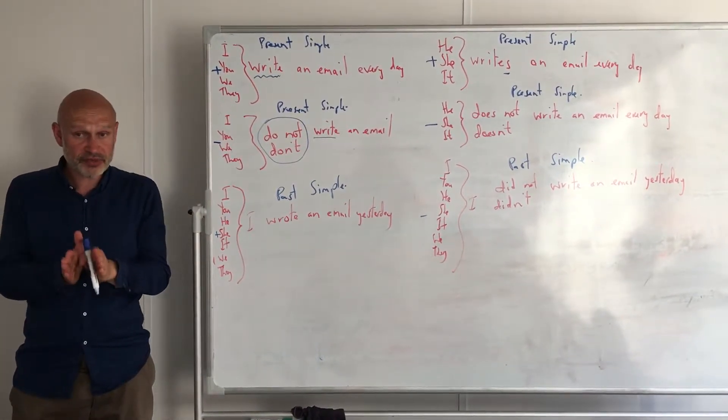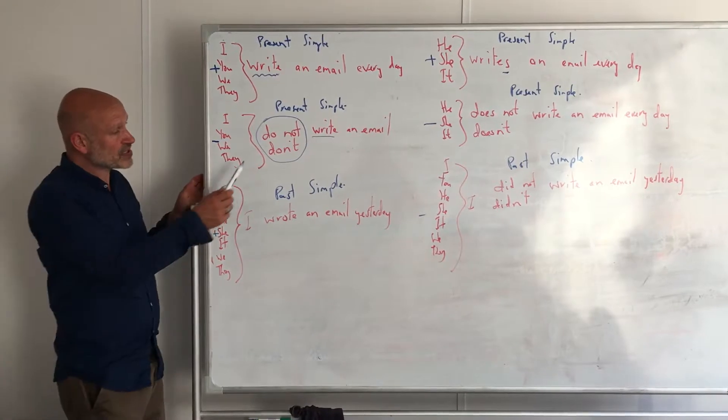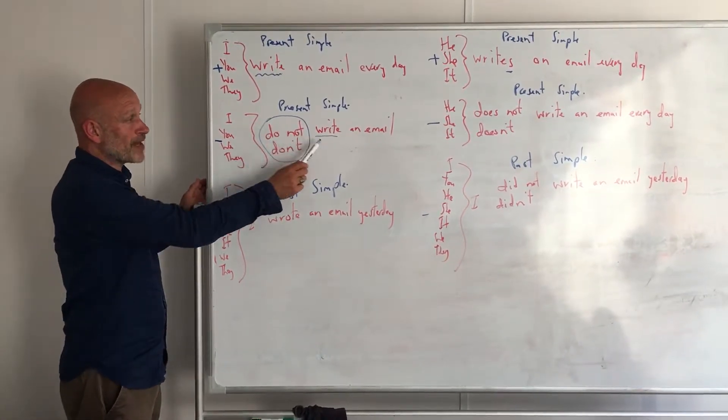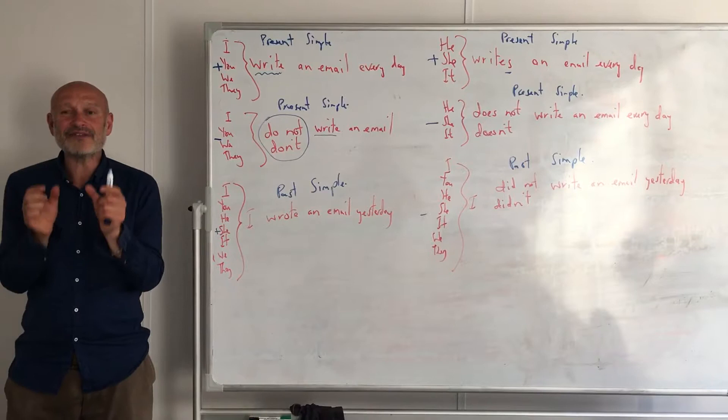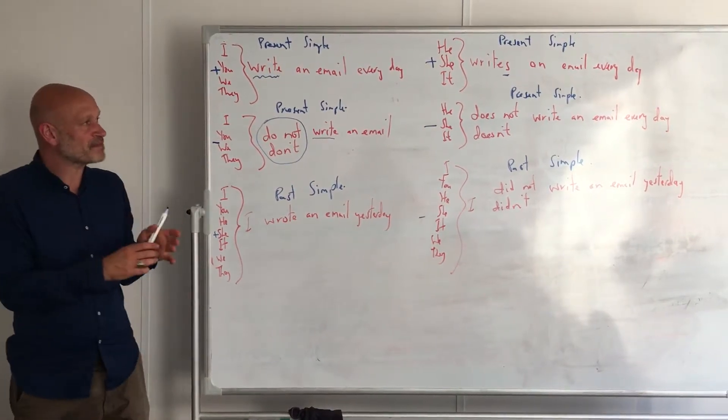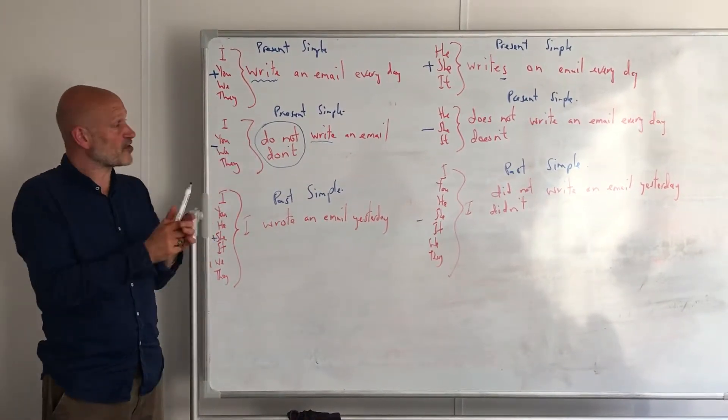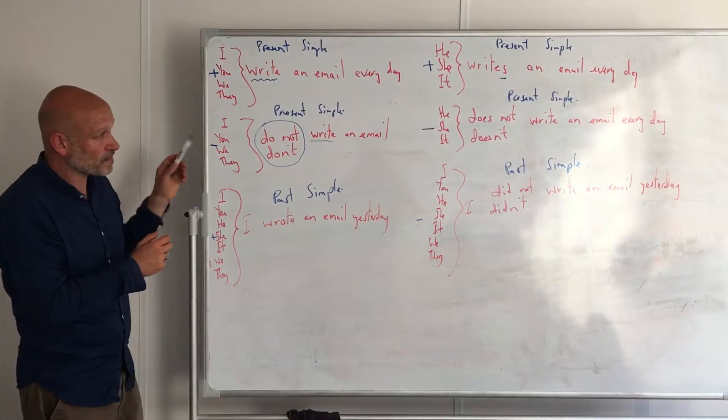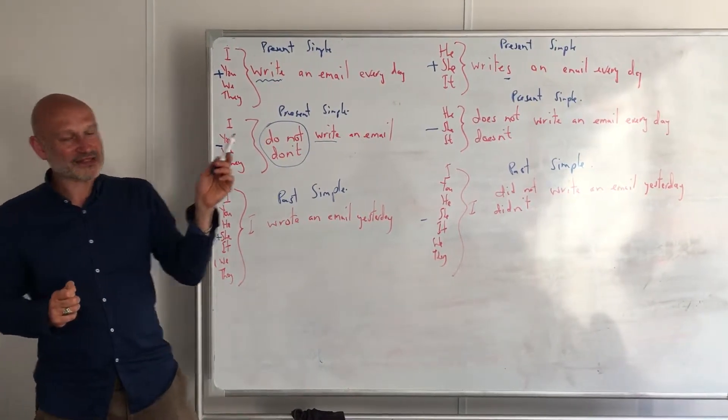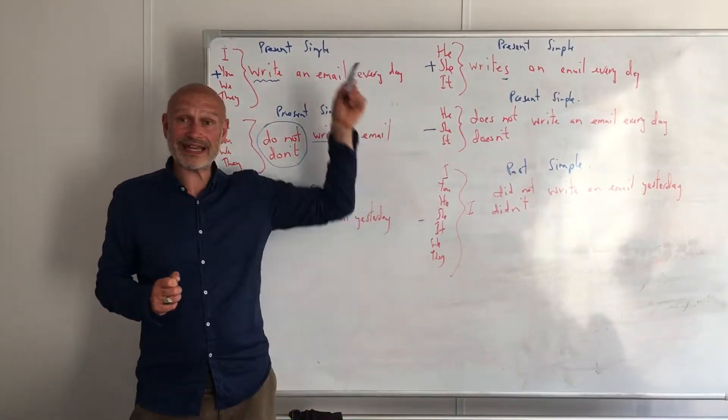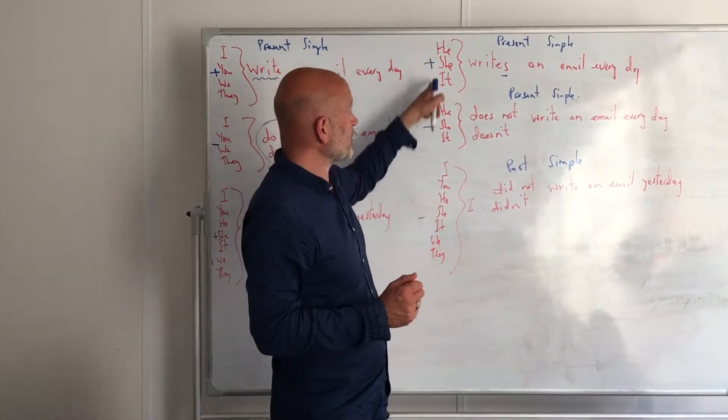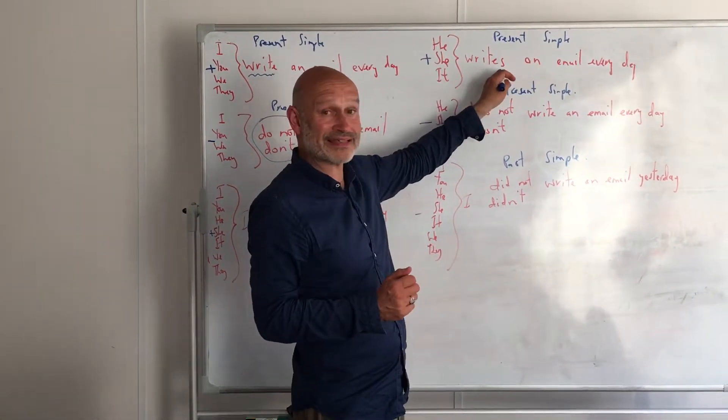The other thing we do is we make sure that this verb stays present simple first person. As soon as we use this little auxiliary verb, the main verb always stays—it's called infinitive—but it's basically present simple first person: I, you, we, they. And that makes a lot of sense when you come to he, she, it in the negative.